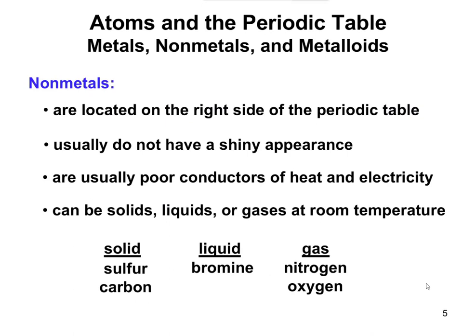Nonmetals are going to be on the right side of the periodic table, and they have basically the opposite properties of the metals. They don't have a shiny appearance. They're not good conductors of heat and electricity. And nonmetals can really be any of the states of matter. There's some that exist as solids, some that exist as liquids, and some that exist as gases.